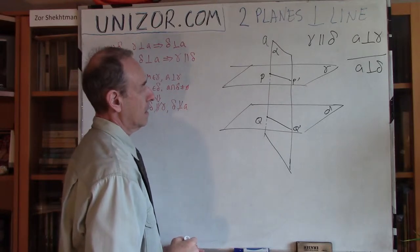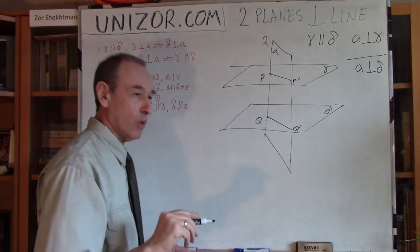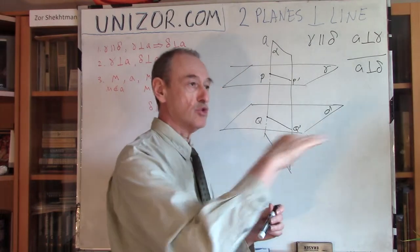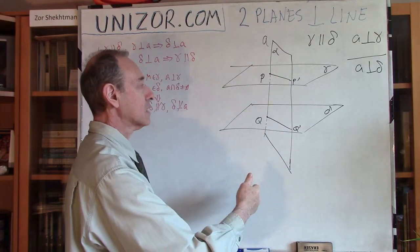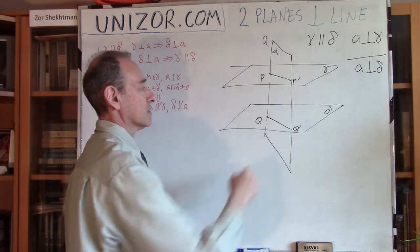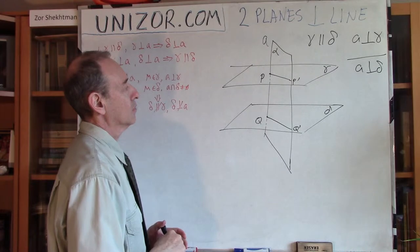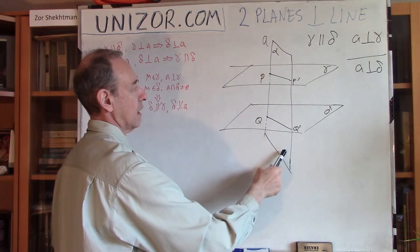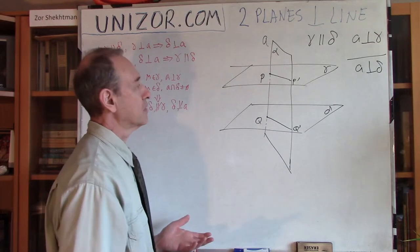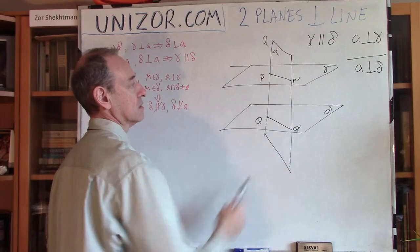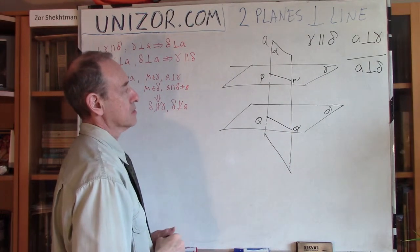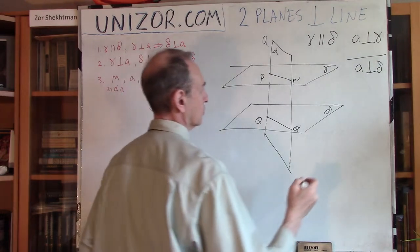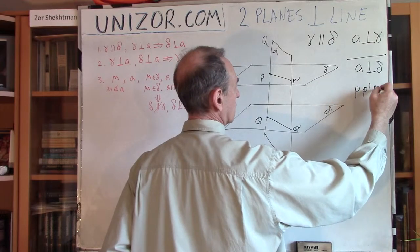These lines PP prime and QQ prime are supposed to be parallel, because we already discussed this theorem when talking about parallel planes: if two parallel planes are intersected by a third plane, then the lines of intersection must be parallel to each other. These lines lie in the same plane alpha and must not have any common points — because if they did, the planes would intersect, and they are supposedly parallel. So PP prime is parallel to QQ prime.